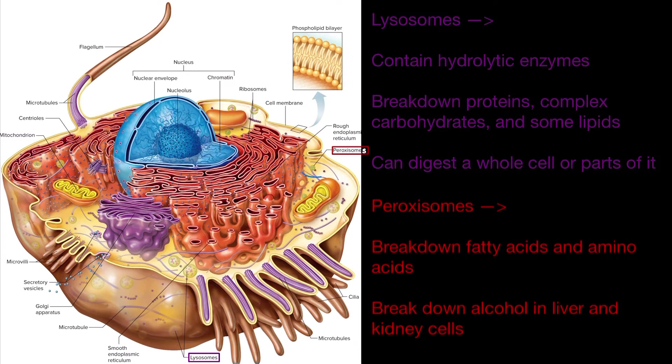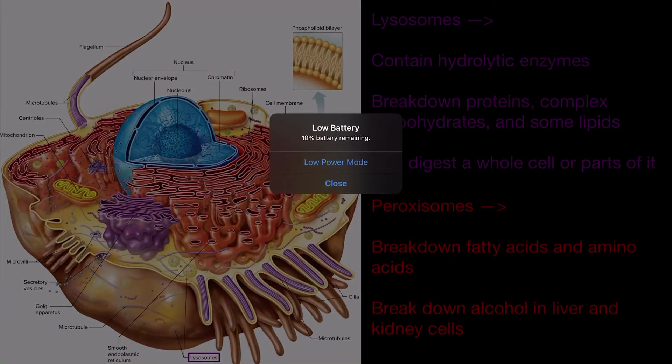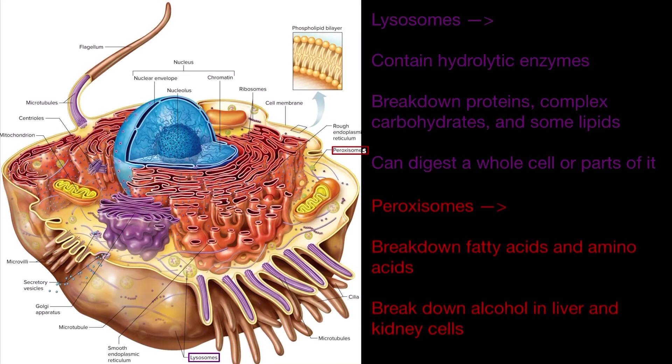Peroxisomes over here, they're going to be involved in the breakdown of fatty acids and amino acids and they're also going to be the organelles that are breaking down alcohol in the liver and kidney cells.